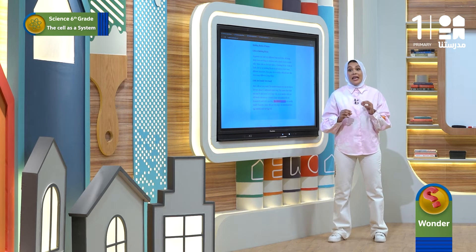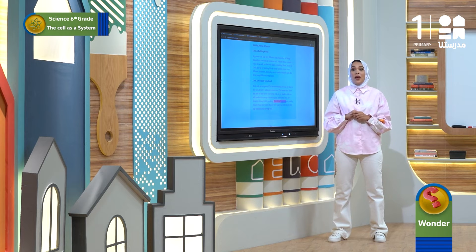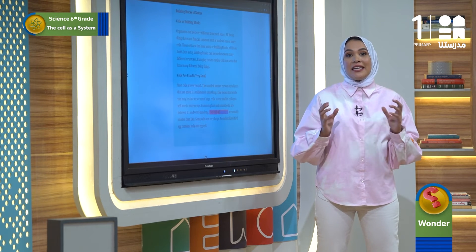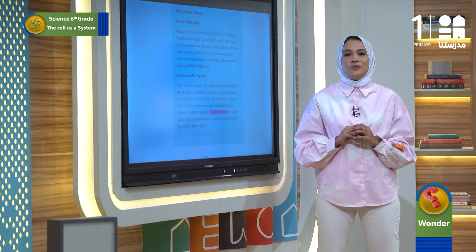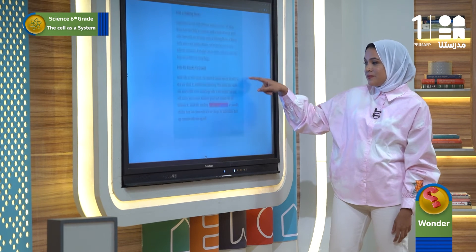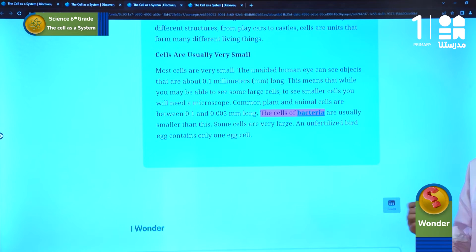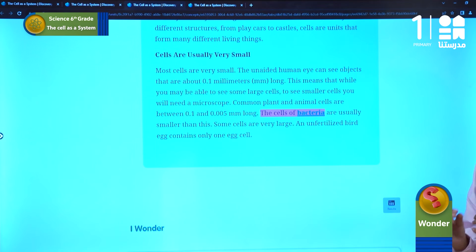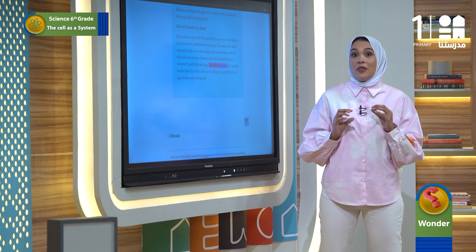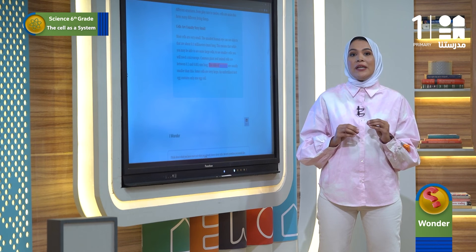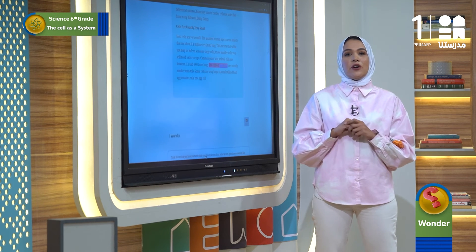Most cells are very tiny and to see them, we need a microscope. But there are large cells that the unaided human eye can see easily as well. Did you notice the highlighted word? Bacteria — this is one of the key vocabularies. There are many types of bacteria; some are useful and others are harmful, which may cause some diseases. The most important thing to know is that the cells of bacteria are usually smaller than any other cells of living organisms.